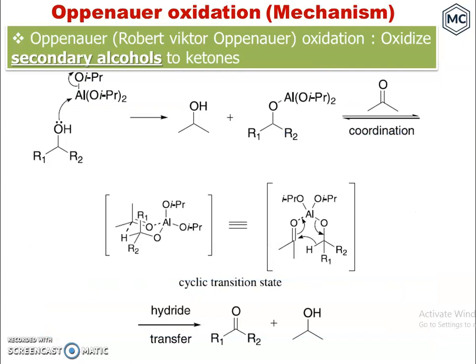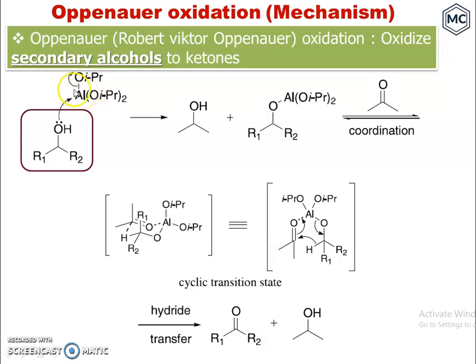The mechanism of Oppenauer oxidation: the reaction oxidizes a secondary alcohol to a ketone. The secondary alcohol, with aluminum isopropoxide, uses its lone pair to form a coordinate covalent bond with aluminum.